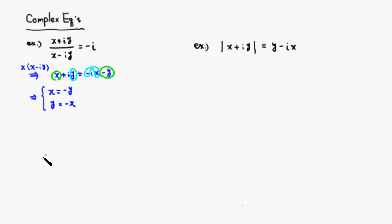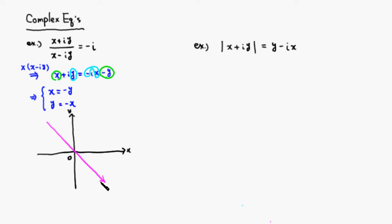If you sketch the solution region of this equation, any point on the line y = -x is a solution. It's going to be a line with slope -1 going through the origin. So that's the solution to the first equation.